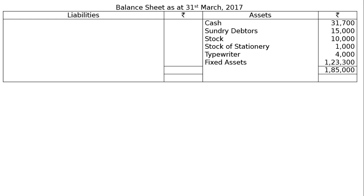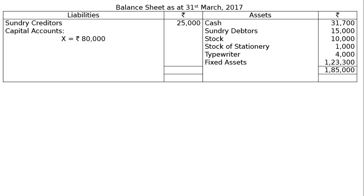The asset side total of Rs 1,85,000 tallies with the book figure. Creditors Rs 25,000. Capital accounts: X Rs 80,000, Y Rs 40,000, Z Rs 40,000 — totalling Rs 1,60,000. Liability side totalling is Rs 1,85,000. This is the final answer.